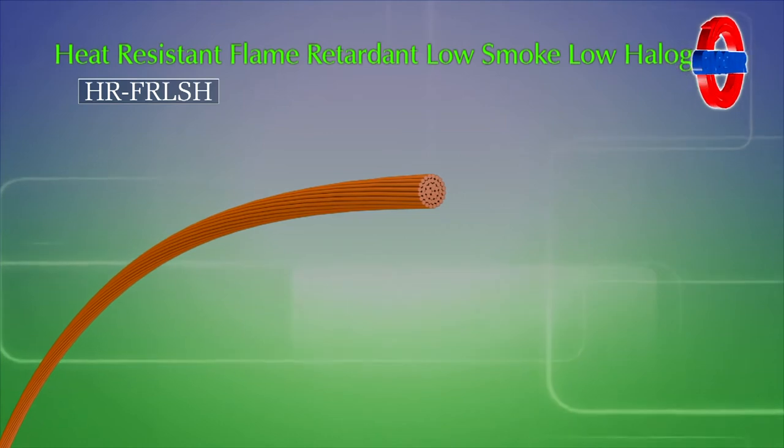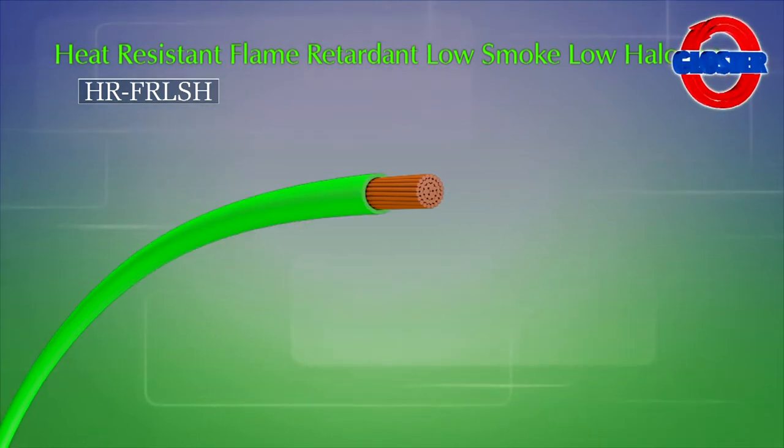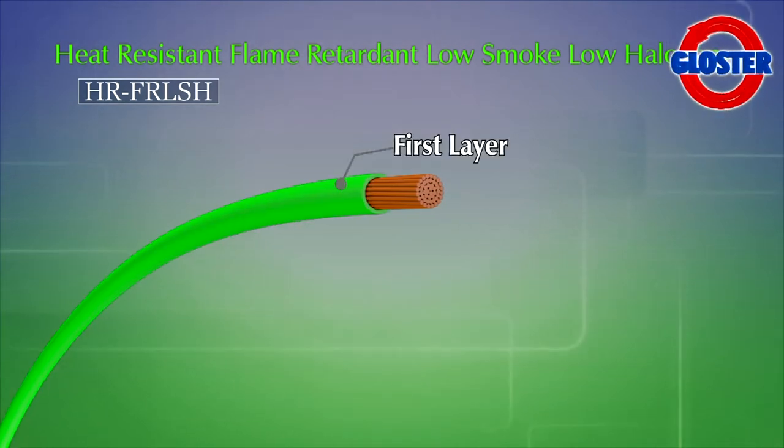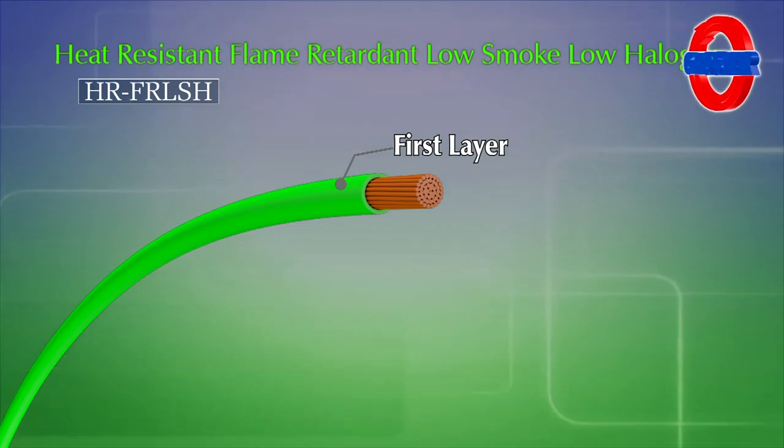Specially formulated in-house heat resistant, flame retardant, low smoke, low halogen insulation on first layer makes our wires handle higher temperatures and run cooler. IS 694 specifies 70 degrees Celsius continuous operating temperature.